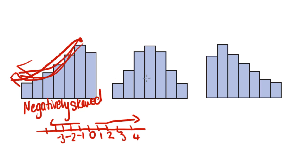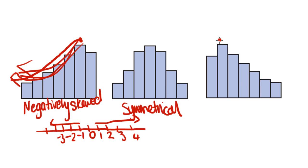This one here — what's the shape? It's symmetrical, because it's roughly balanced either side and all kind of even. It looks the same on either side. And this one here — it looks like the first one but the opposite way. Put your pen on the top, go down the hill the fun way, not off the cliff. Which way is your arrow pointing? It's pointing towards positive numbers, so it's positively skewed.